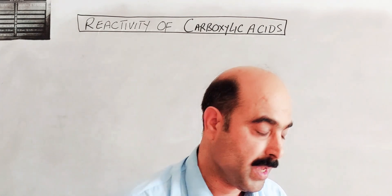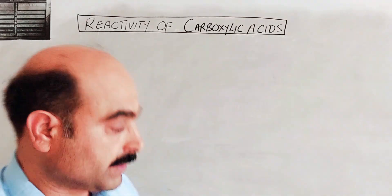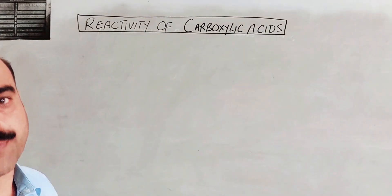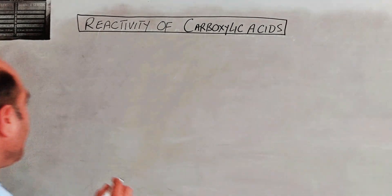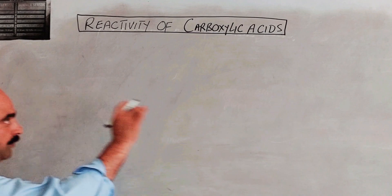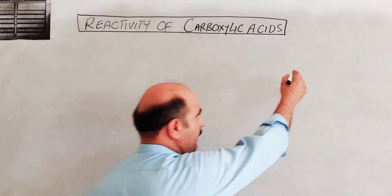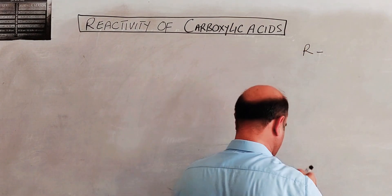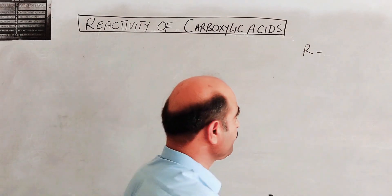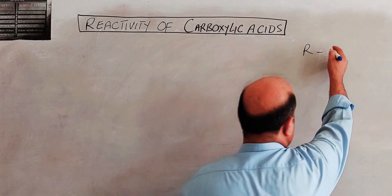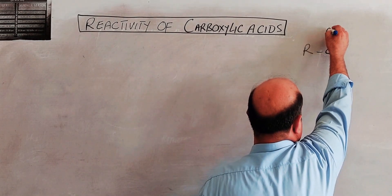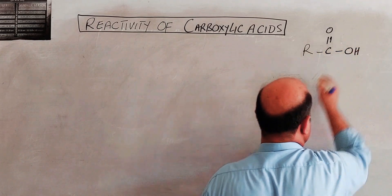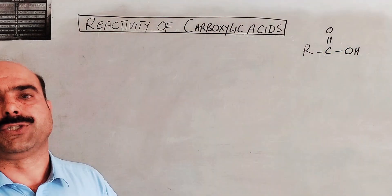Now what we discussed is the carboxylic acid general formula of carboxyl group. The general formula of carboxylic acid is R-C double bond O and O-H.